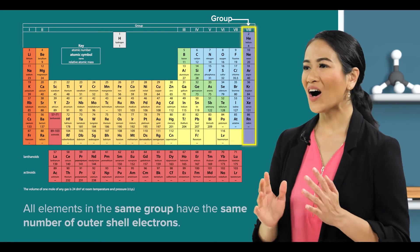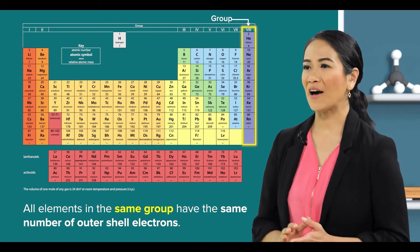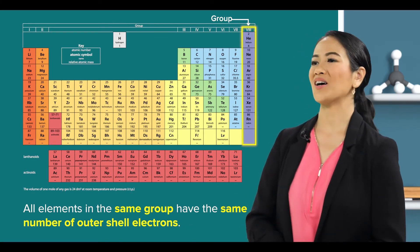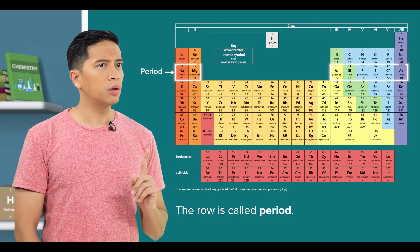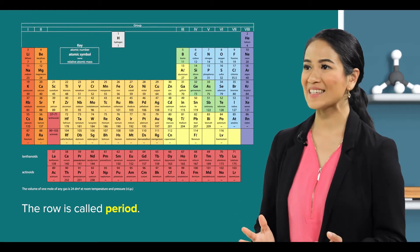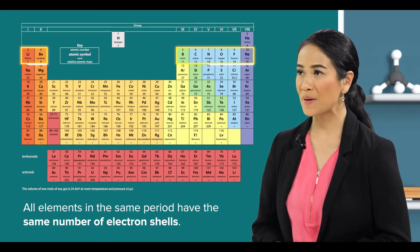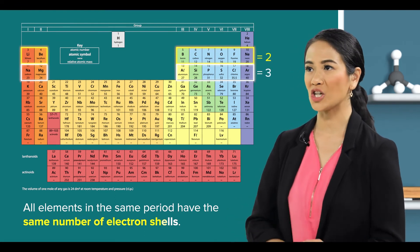That's right! All elements in the same group have the same number of outer shell electrons. And the row is called period? Yes! All elements in the same period have the same number of electron shells.